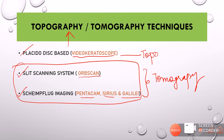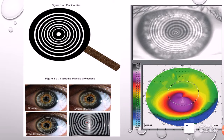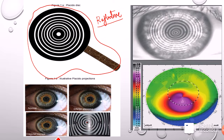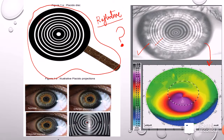The first technology is Placido imaging, the oldest technique in topography and tomography. It is a reflective technology. The video keratoscope has a device with concentric rings of alternating light and dark bands, and these rings are reflected onto the cornea. The image processing software then analyzes the distance between these rings in the reflection to deduce and make deductions about the anterior surface of the cornea.